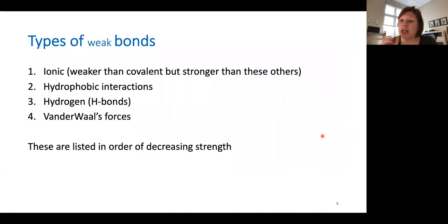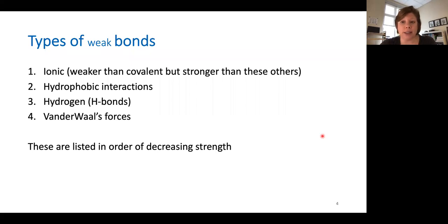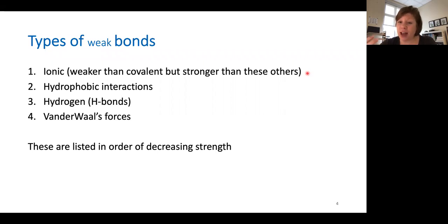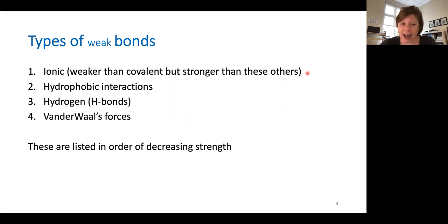We've talked about covalent bonds, but I also want to mention the really important types of weak bonds that exist in biochemistry. We've already mentioned ionic bonds, which are weaker than covalent bonds but they're the strongest of these weak bonds. Hydrophobic interactions are quite strong. Hydrogen bonds, or H bonds, and the weakest: van der Waals forces.